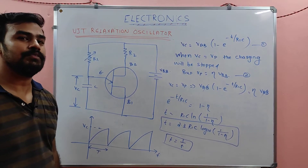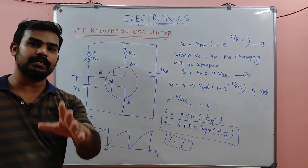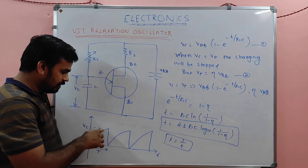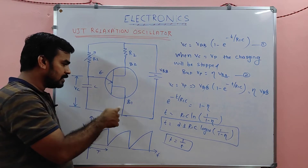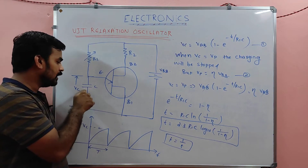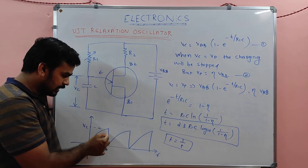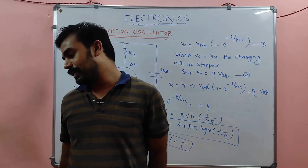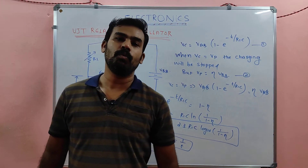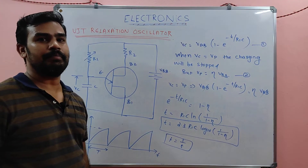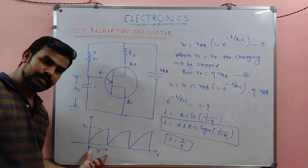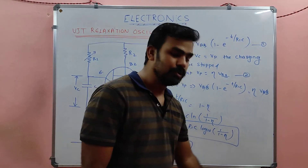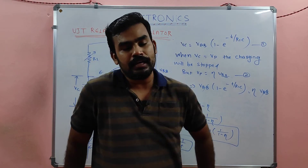How beautiful the circuit is! Simply by using a UJT, two resistors, a capacitor, and a supply, you generate a sawtooth waveform. When the voltage reaches VP, the UJT turns on, resistance drops to zero, and the capacitor voltage drops to zero, then it charges again. This is the UJT relaxation oscillator. The timing — and therefore the frequency of oscillation — can be controlled by varying R1. In the next class we will discuss FET.